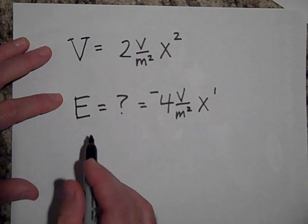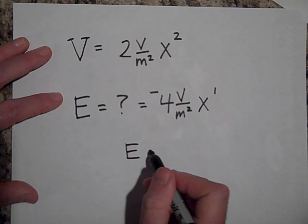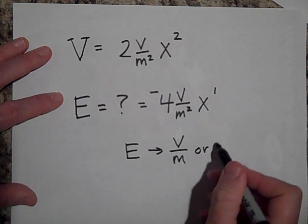Yeah, one of the units for electric field is volts per meter. Electric field can be - the units for it are either volts per meter or newtons per coulomb.